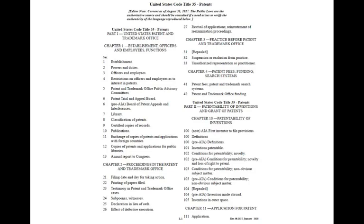You've got Chapter 1, which is the establishment of the office of the USPTO — basic stuff. Chapter 2, as they call it, note all these sections. Chapter 2 starts with a 2, so you're in the 20s. Chapter 3 starts in the 30s, and it's about practice before the Patent and Trademark Office.